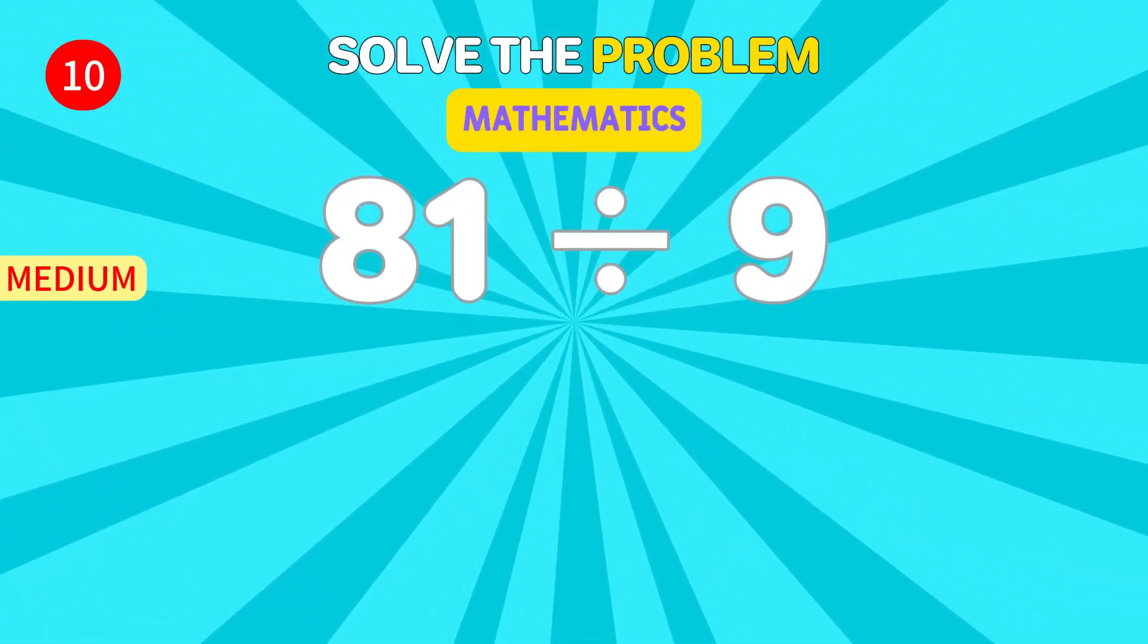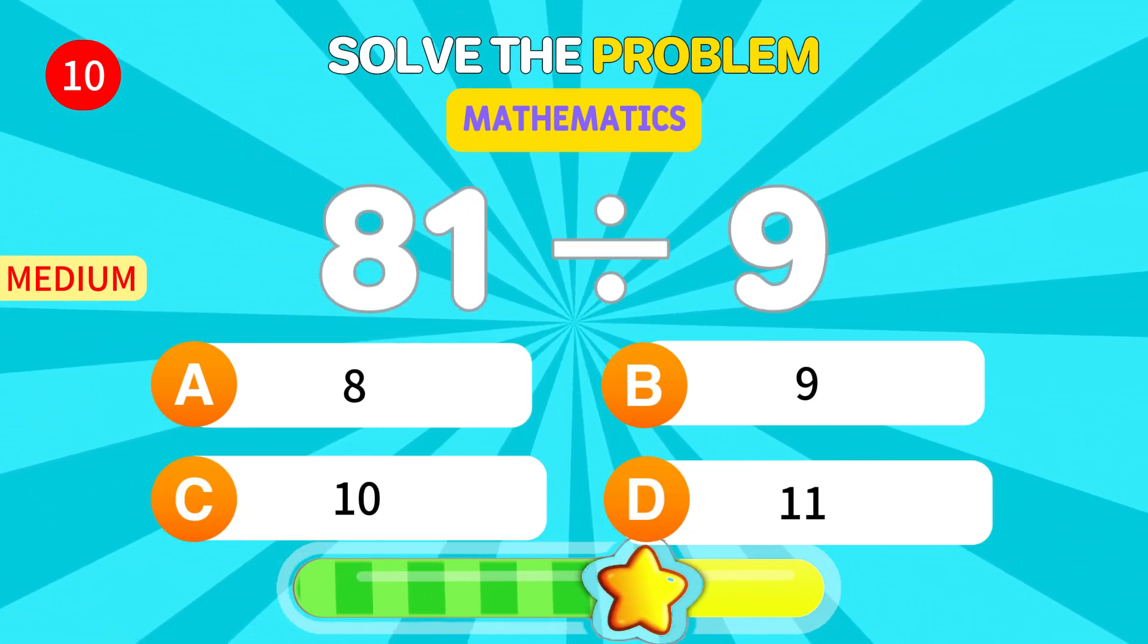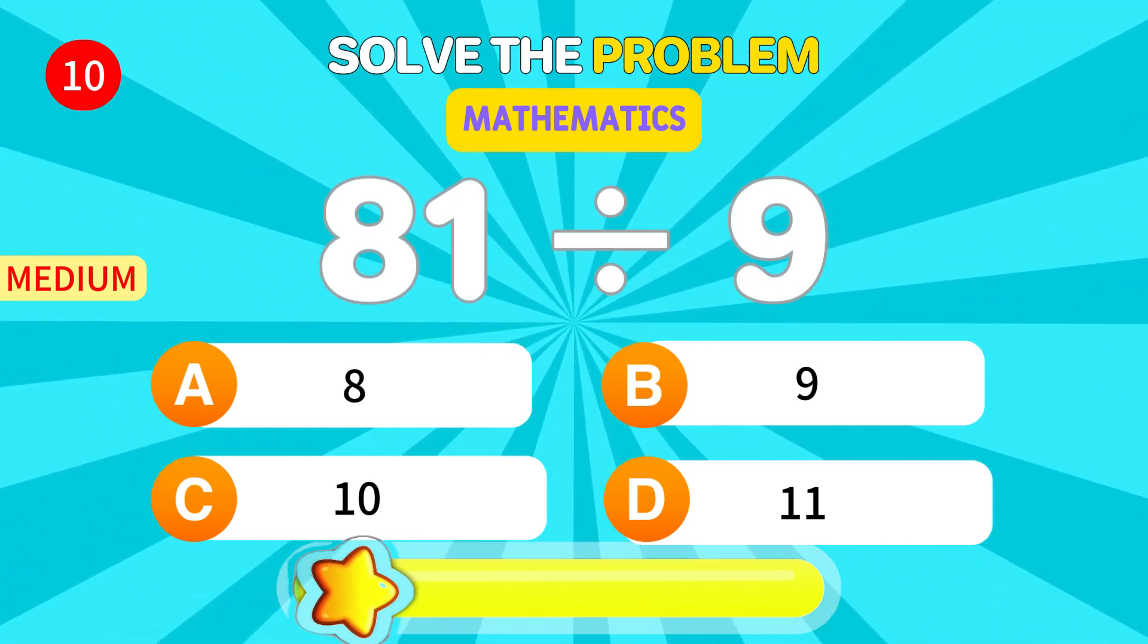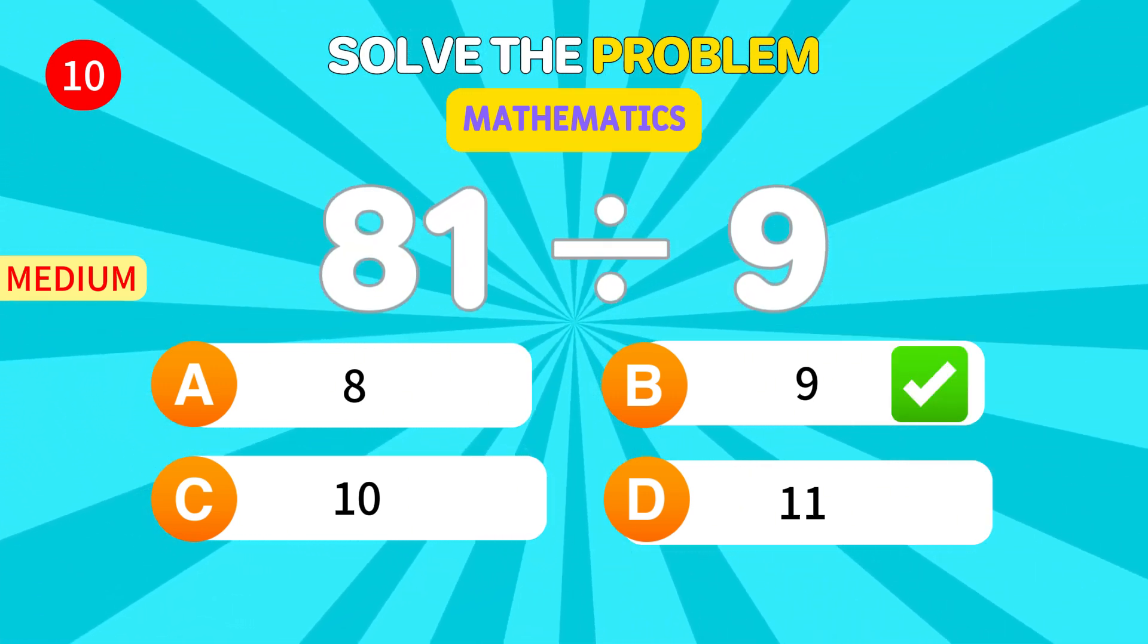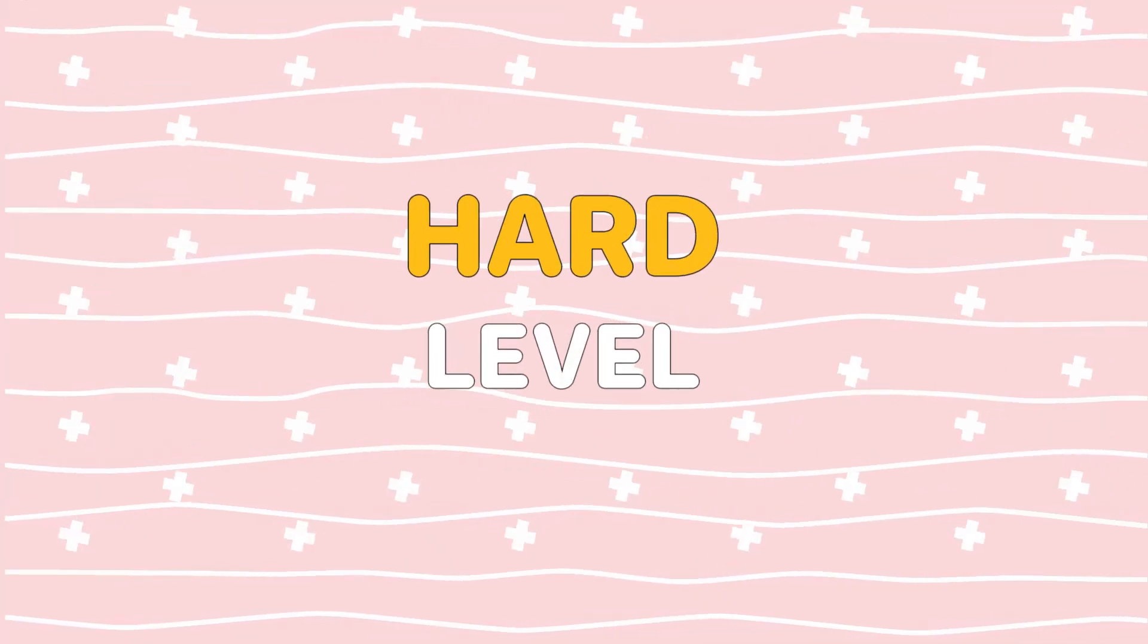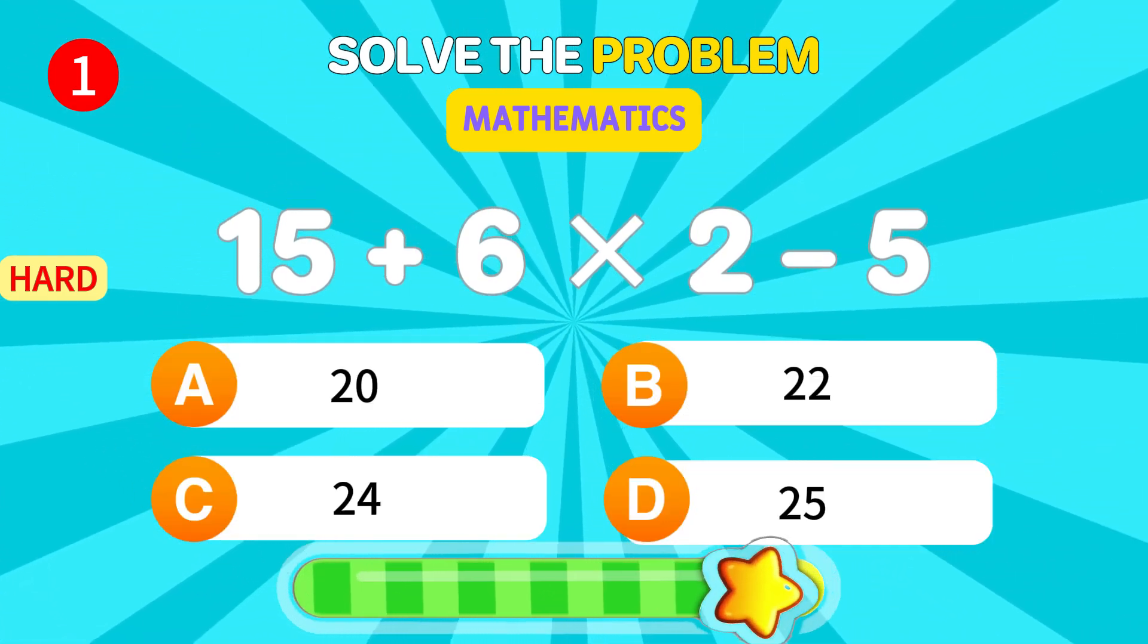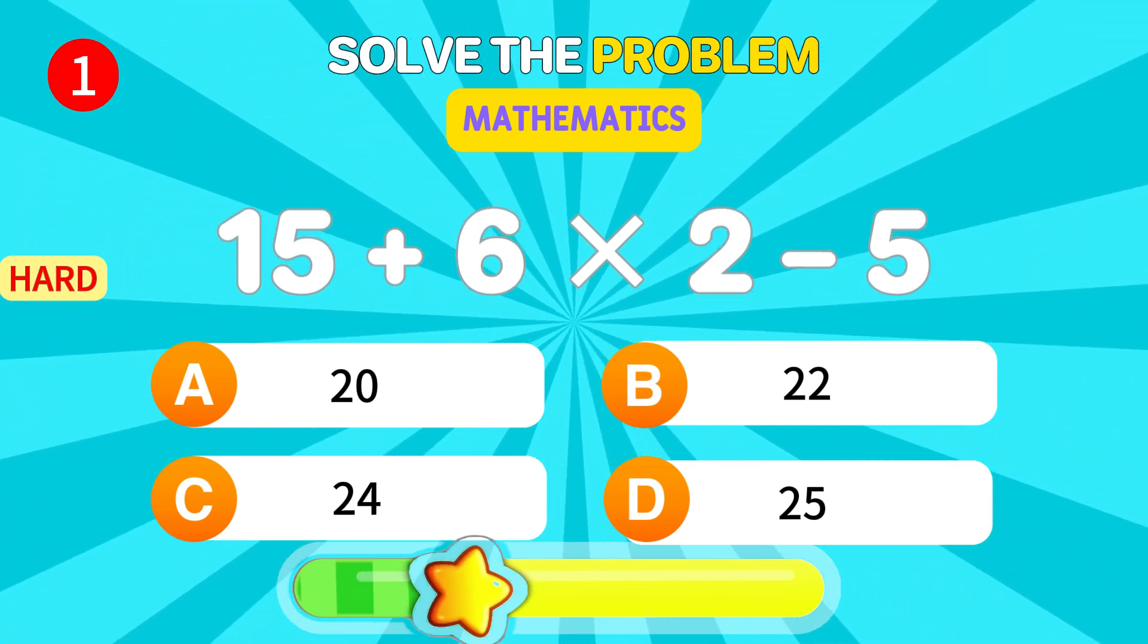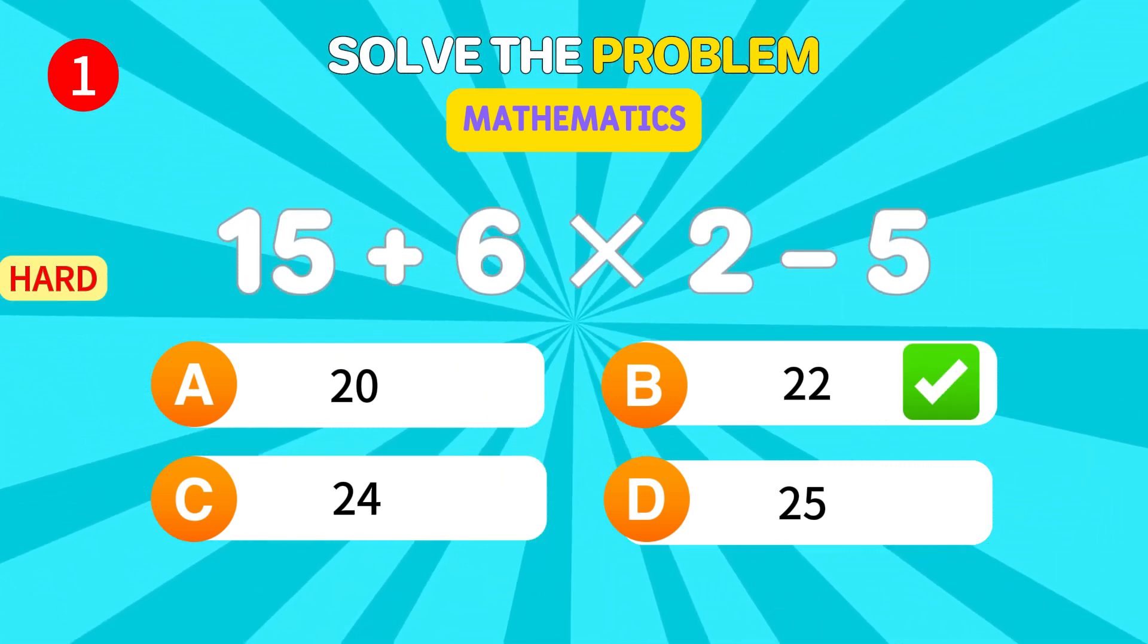What's 81 divided by 9? 9. Amazing. Time for the hard level. What's 15 times 6 minus 5? 22. Impressive.